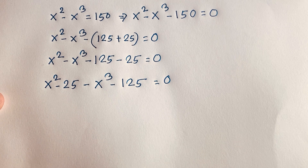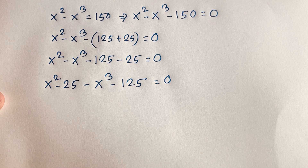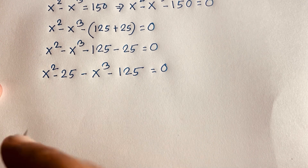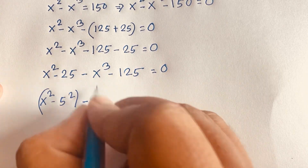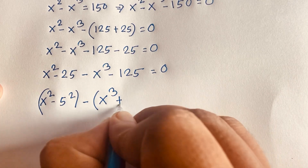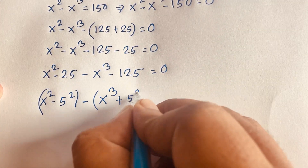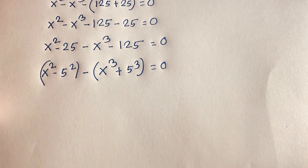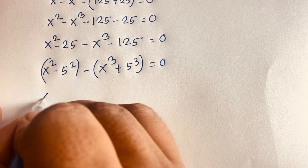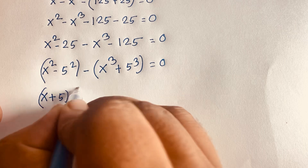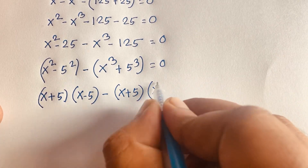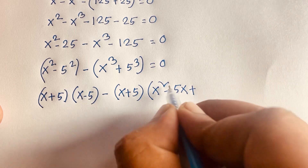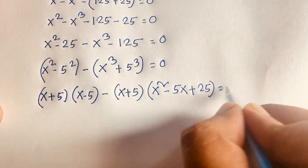Now, x squared minus 25 is x squared minus 5 squared. We know the identity: a squared minus b squared equals (a+b)(a−b). And for the cubes part, x cubed minus 5 cubed uses the identity a cubed minus b cubed equals (a−b)(a squared plus ab plus b squared), where b is 5, so 5 squared is 25.